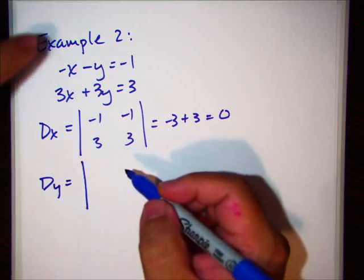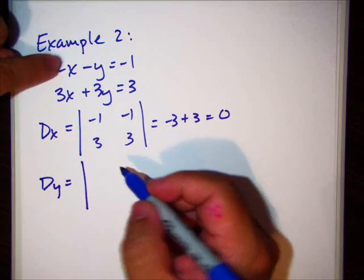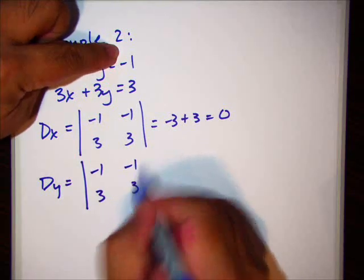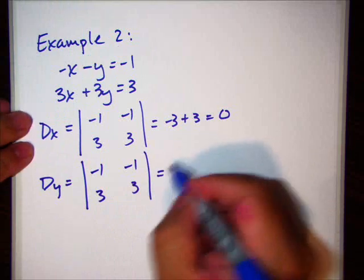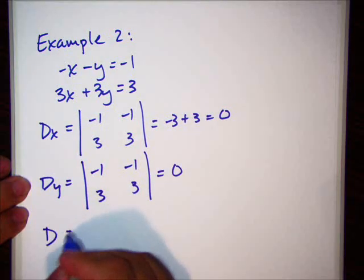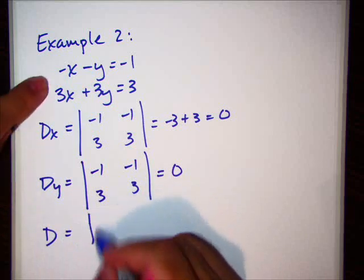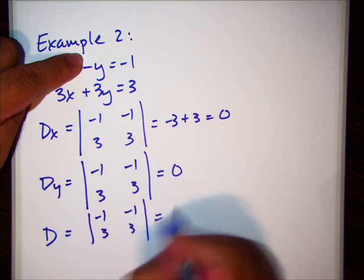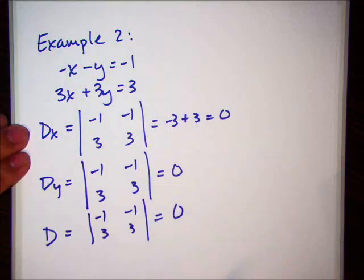dy, dy, what do we got here? The x column, constant column. Produces the same. It's the same as dx. So, we'll say it was 0. d, x column, y column. Same thing again, 0. All of these are 0.